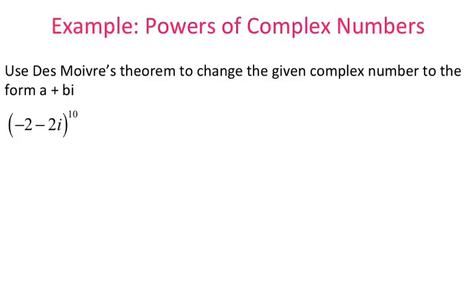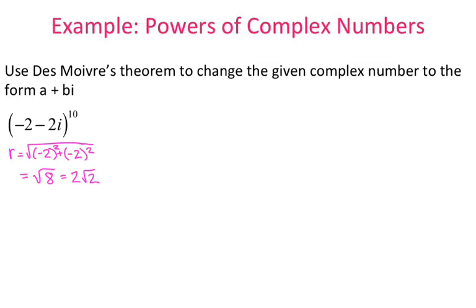The first example uses De Moivre's Theorem. We want to take negative 2 minus 2i and raise it to the 10th power. To use De Moivre's Theorem, you need to know r, n, and theta. So first I'll find r: it's the square root of negative 2 squared plus negative 2 squared — the two components of the complex number. That gives the square root of 8, which simplifies to 2 square root of 2.